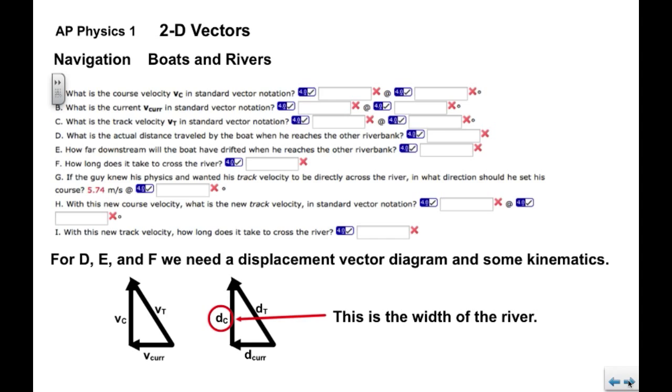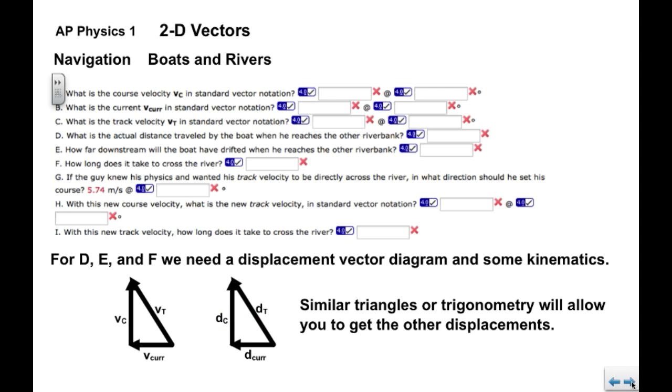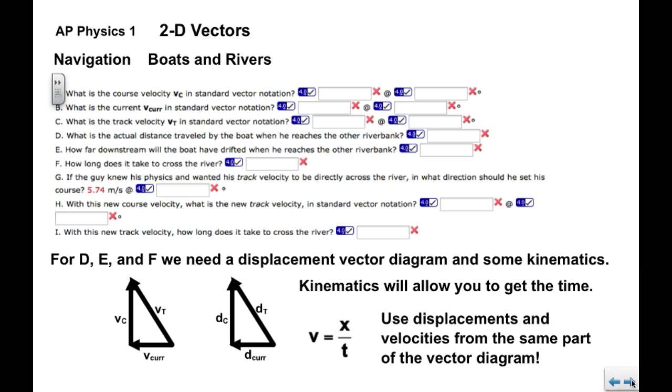We do know that the width of the river, which is associated with the displacement of the course, we do know this value. So once we establish that, we can use similar triangles or trigonometry to get all the other displacements here: how far downstream it goes, what the track distance is, and so on.